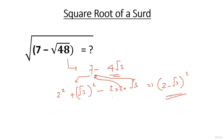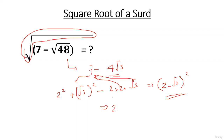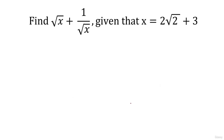As established, there is a square root symbol outside, so the answer cannot be negative. The square root of a positive number has to be positive. Therefore, the square root of 7 minus √48 is 2 minus √3.